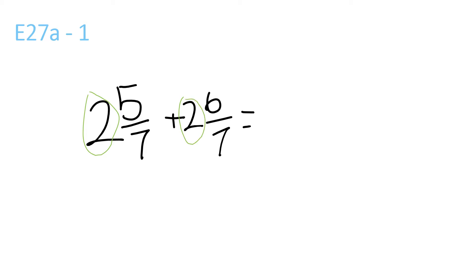2 plus 2 is 4. 5 plus 6 is 11 over 7, because that stays the same. 11 over 7 equals 1 and 4 over 7. So it would be 4 plus 1 and 4 over 7, which equals 5 and 4 over 7.